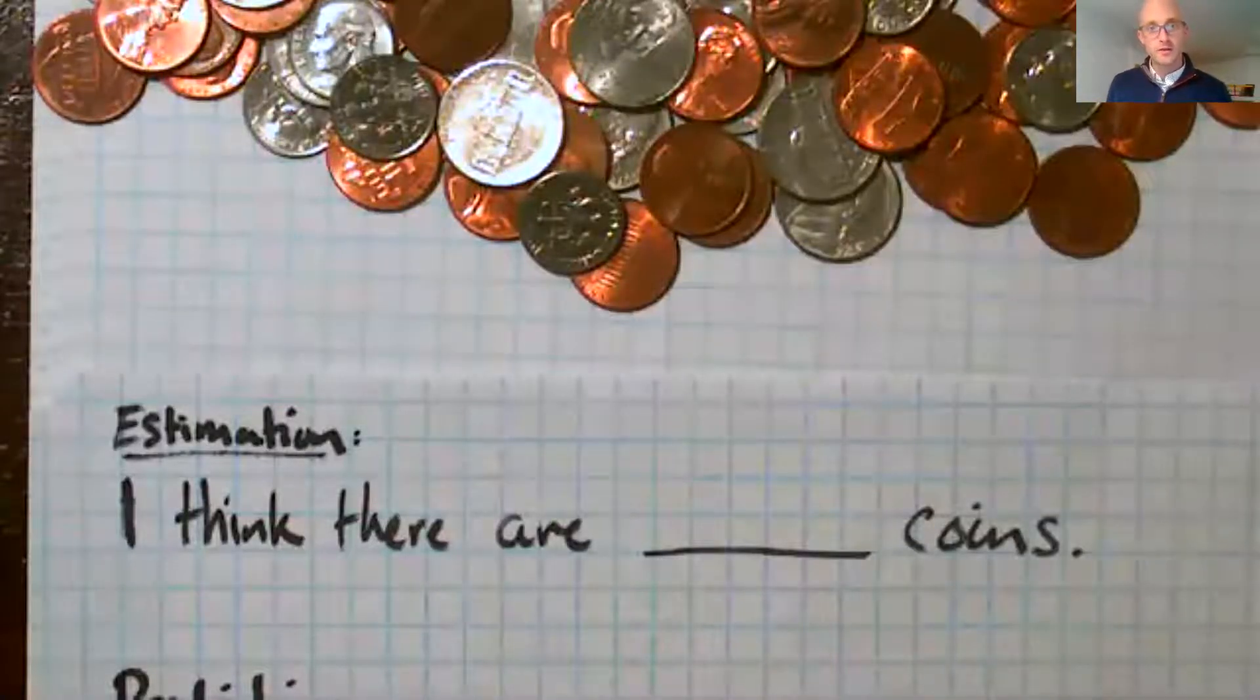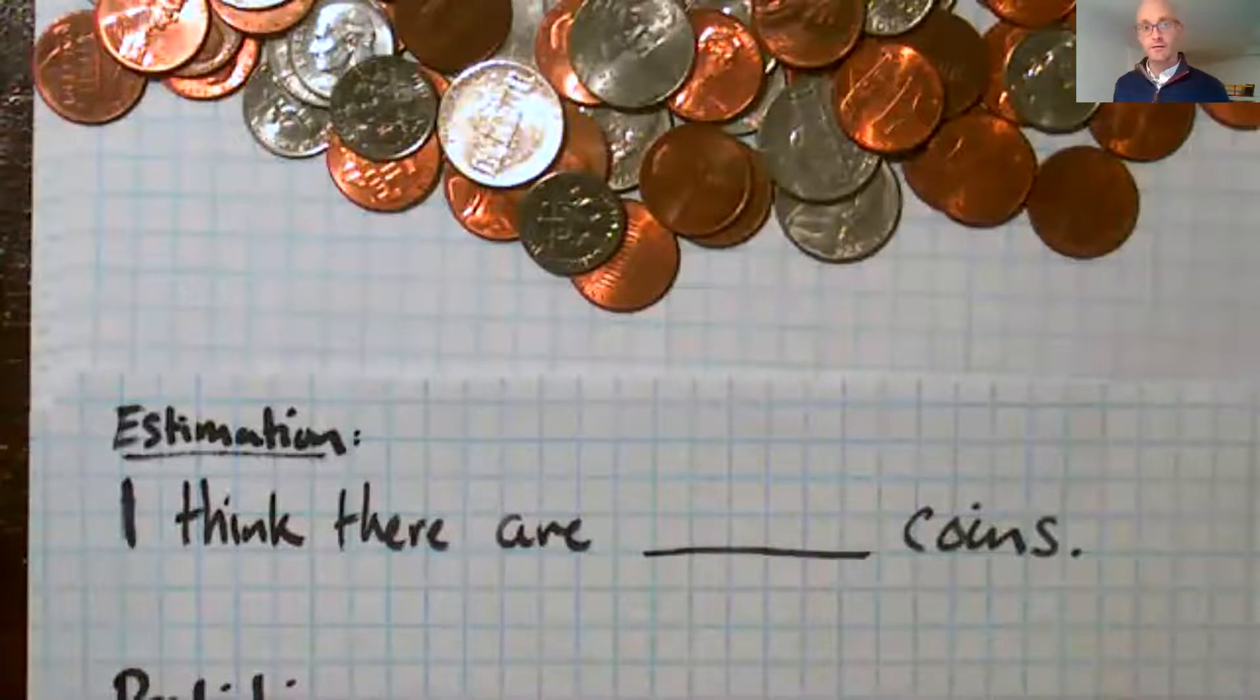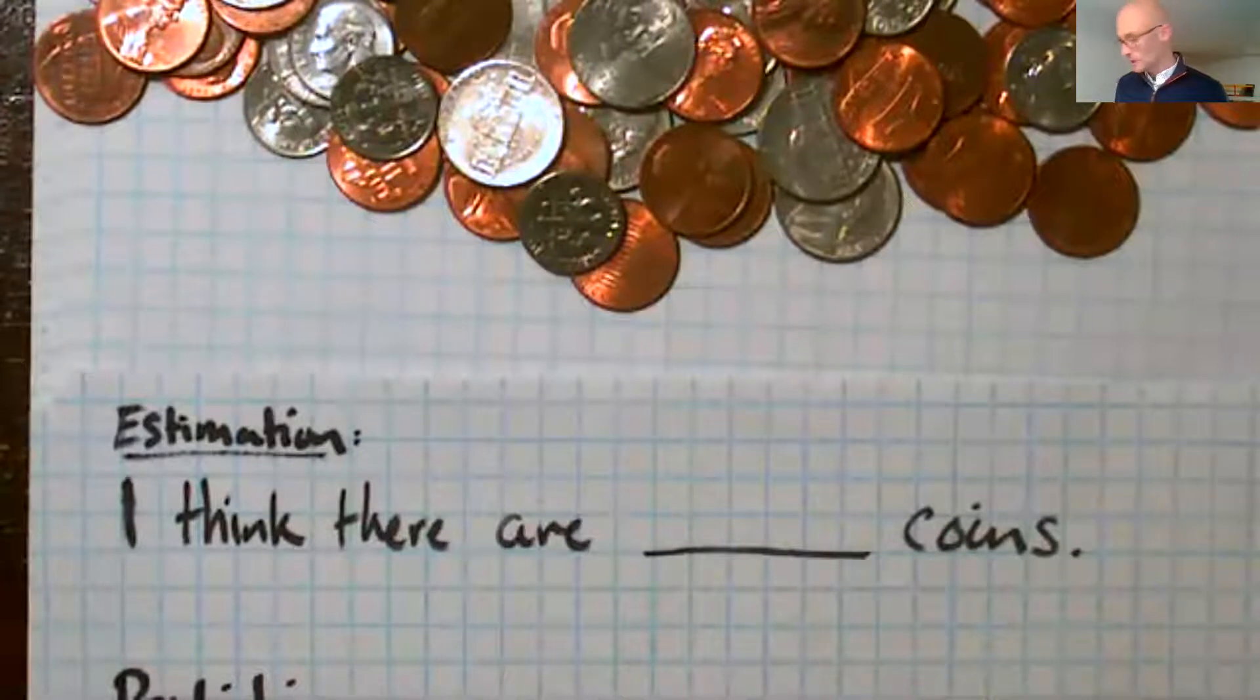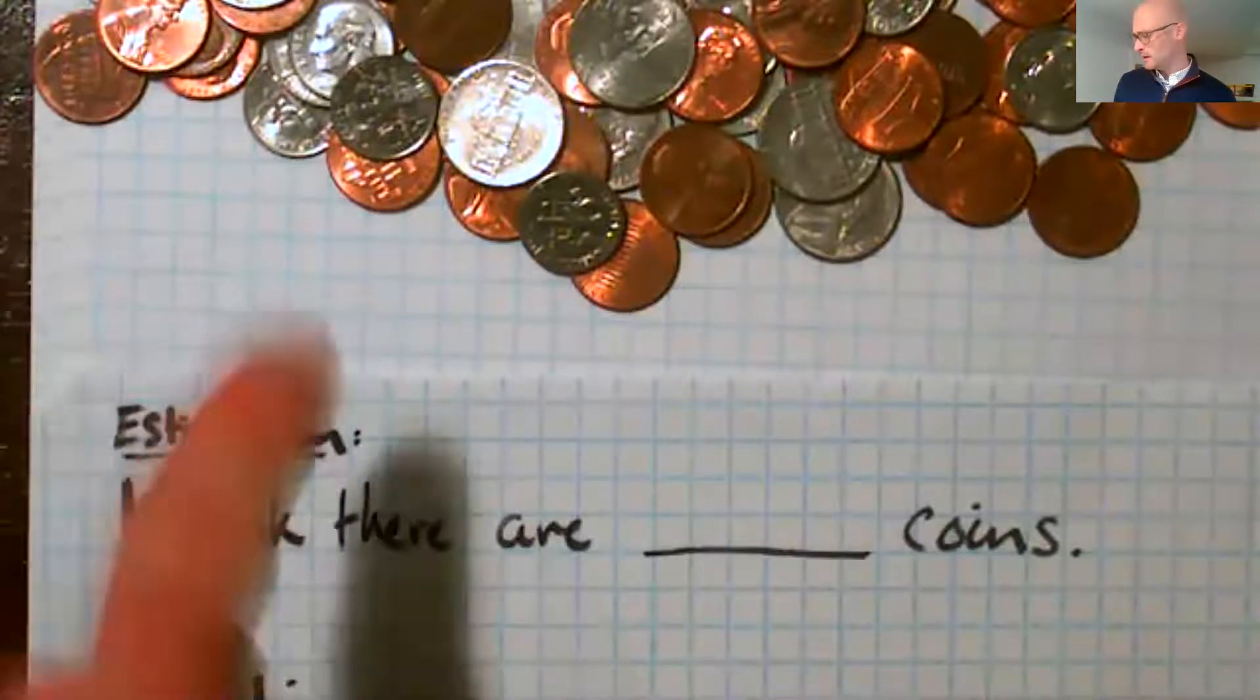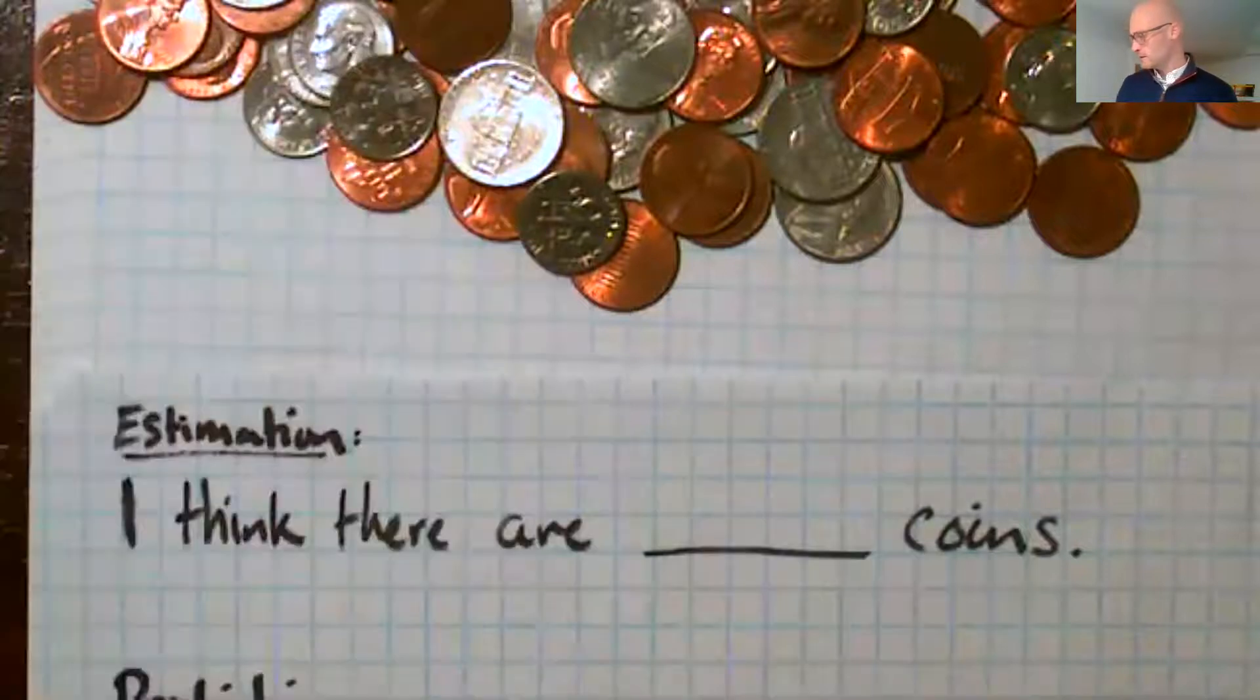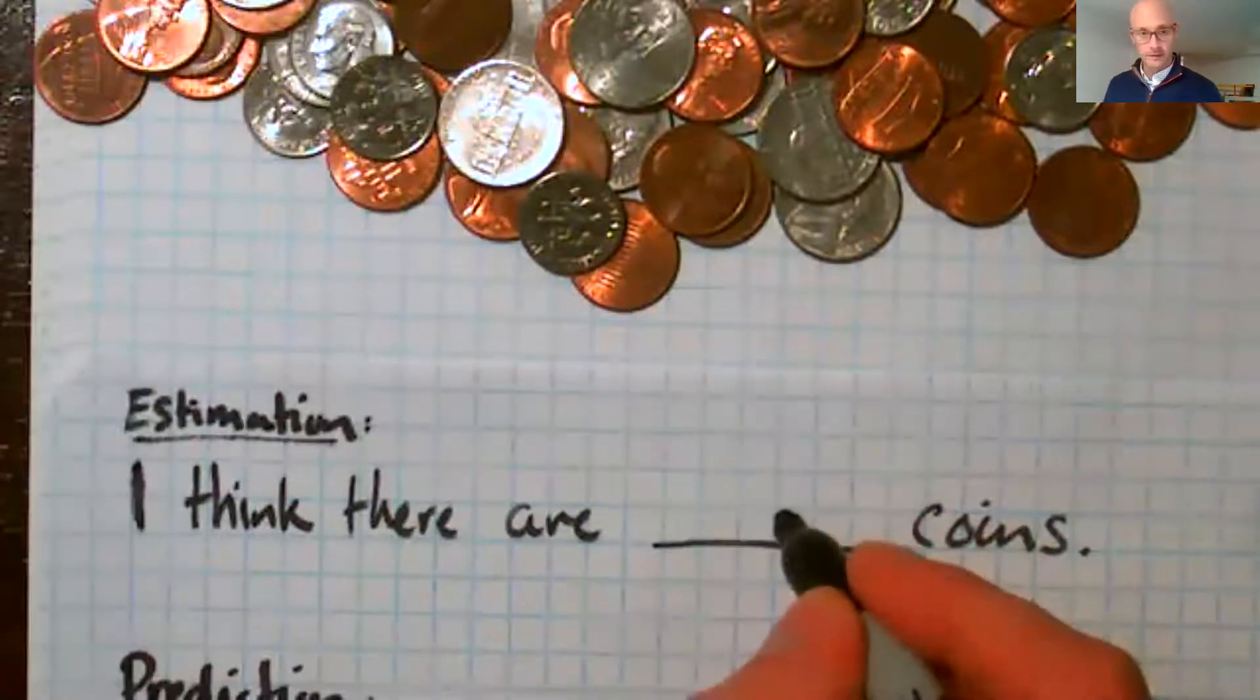Now that you've had some time to play, I want you to make an estimation. I want you to study that big pile of coins that you have on your table and think how many coins are there? How many coins might there be? You might use some strategies like just taking a wild guess. You might study it really hard and say, okay, well there's about maybe 10 right there. And that would make, how many piles of 10 do I think are there? Maybe 20, 30, 40, 50.